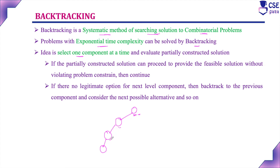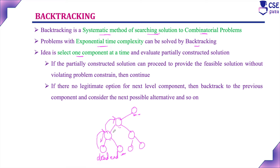If the partially constructed solution is not able to provide a feasible solution and we have reached a dead end — where we cannot proceed further — then backtrack to the previous step or previous state and try the other possible solutions. If that also does not provide a feasible solution, backtrack to the previous state again and try other possibilities. Likewise, we implement and try to provide the feasible solution.